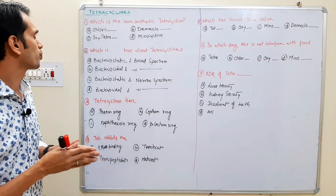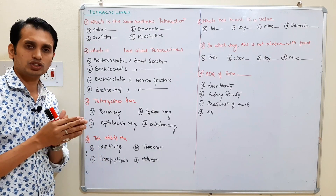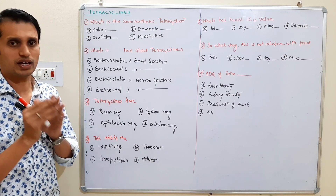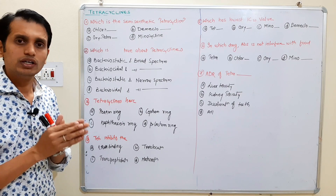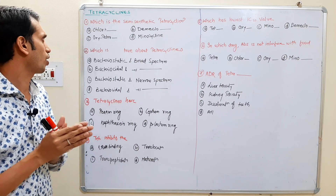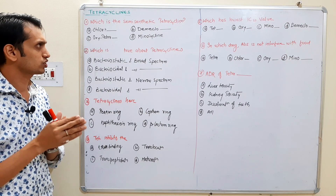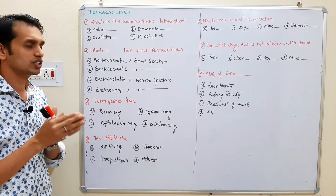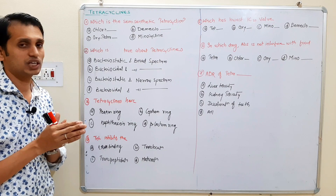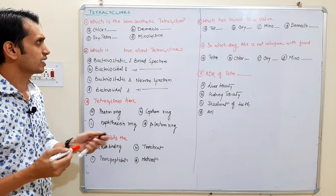Question 1: Which is the semi-synthetic tetracycline? Option A: chlorotetracycline, Option B: demeclocycline, Option C: oxytetracycline, Option D: minocycline. The answer is D — minocycline is the semi-synthetic derivative.